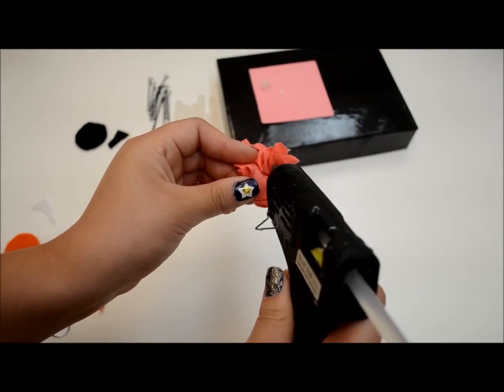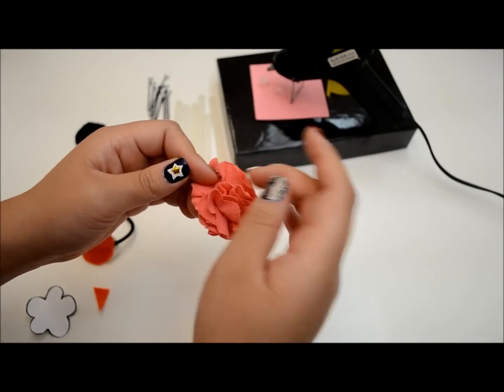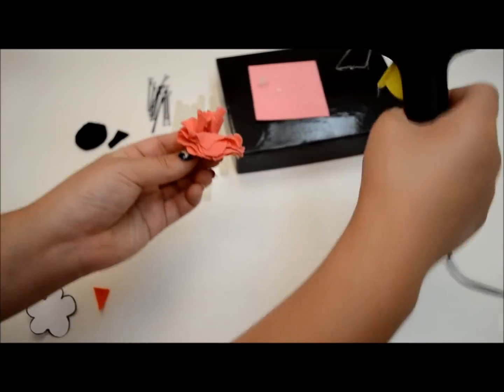Add glue to the center of the flower to connect the second layer of petals to the center and then fluff up all of the petals.